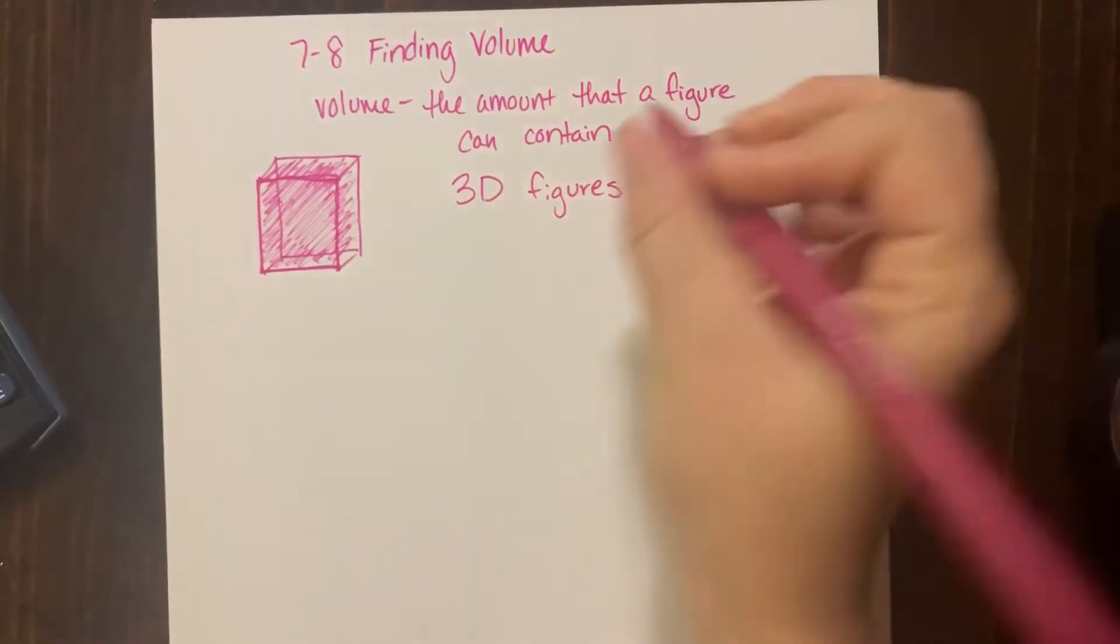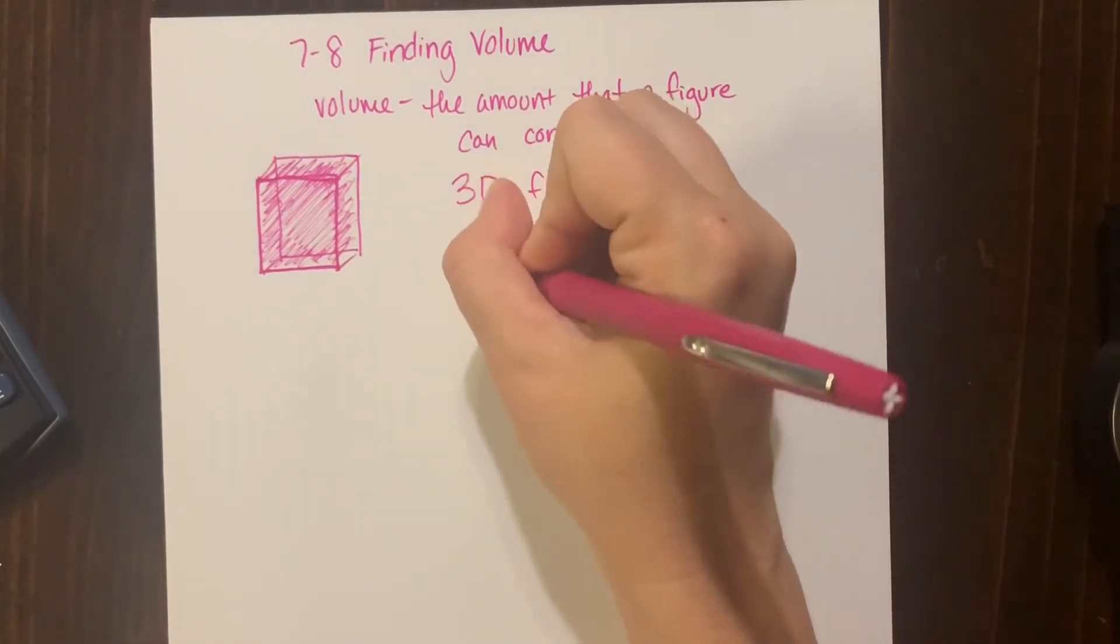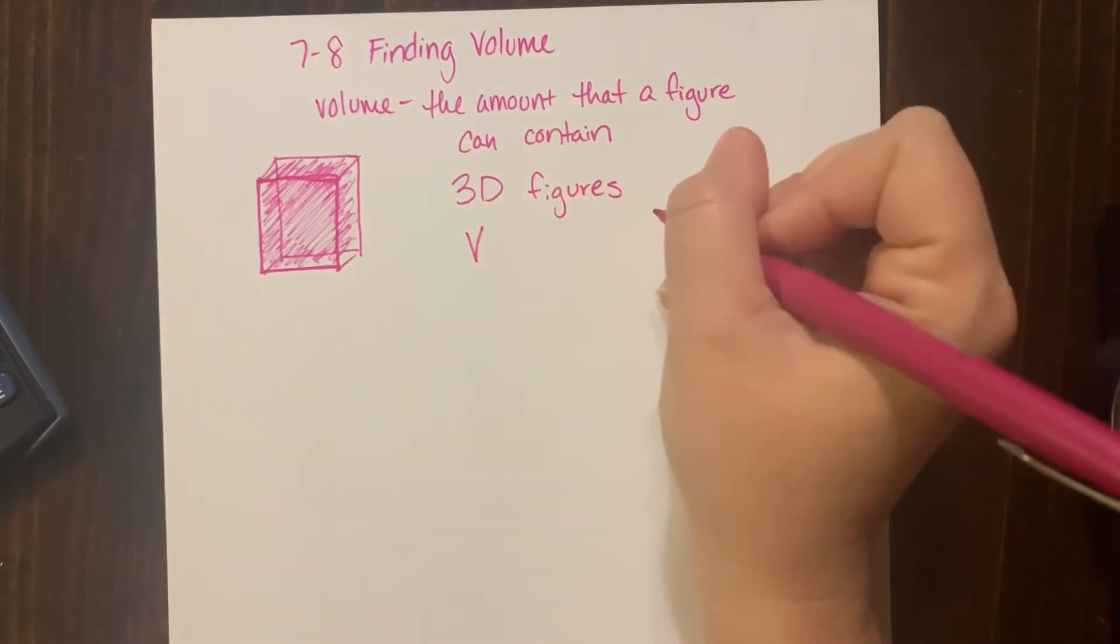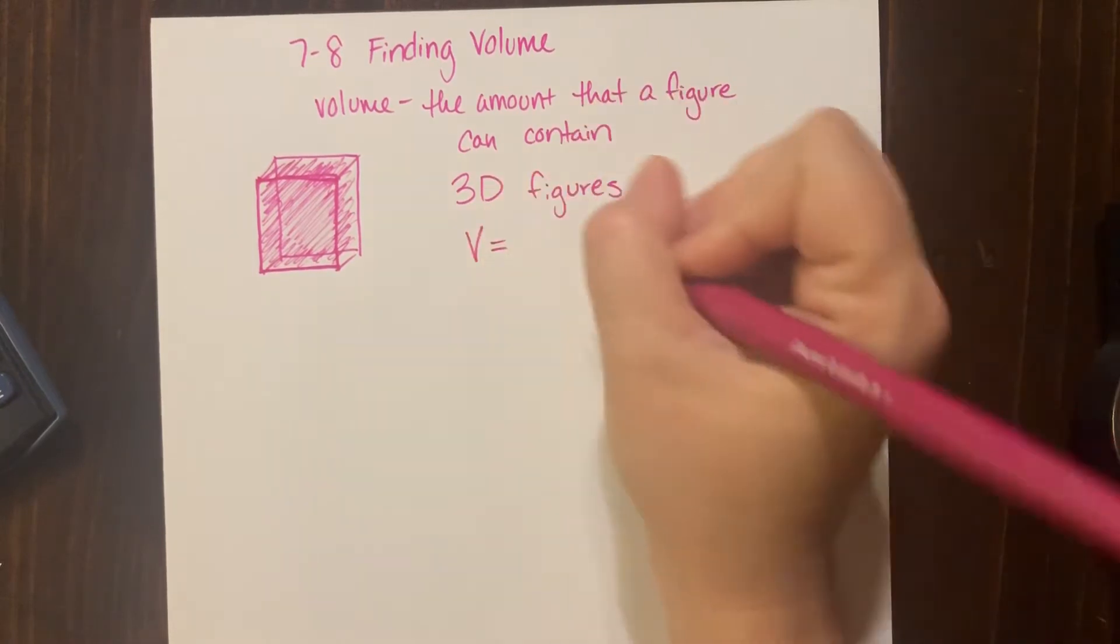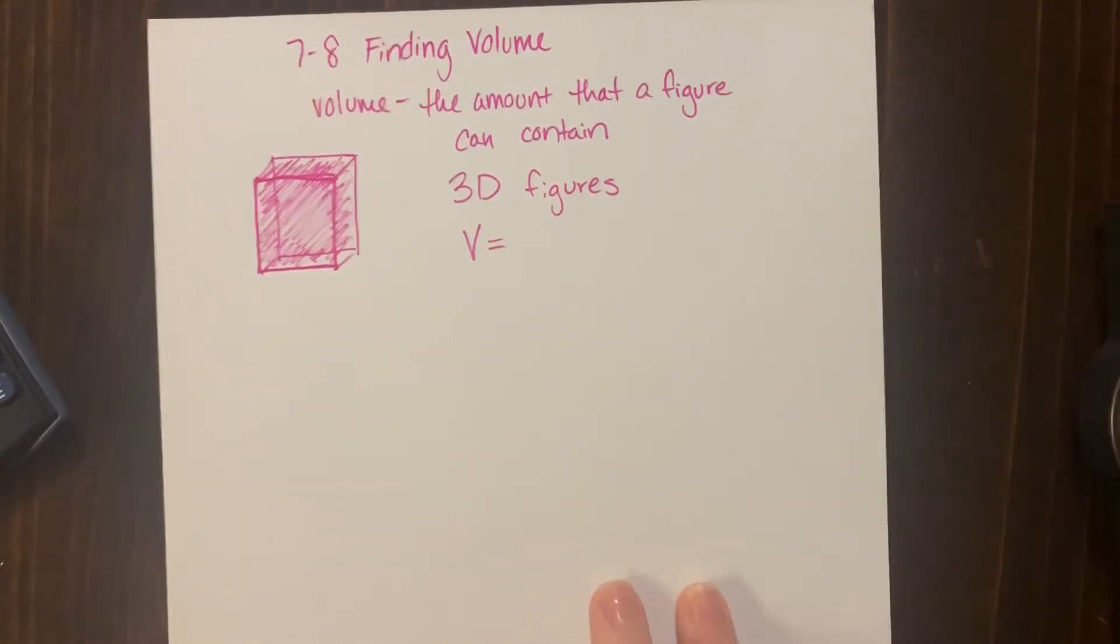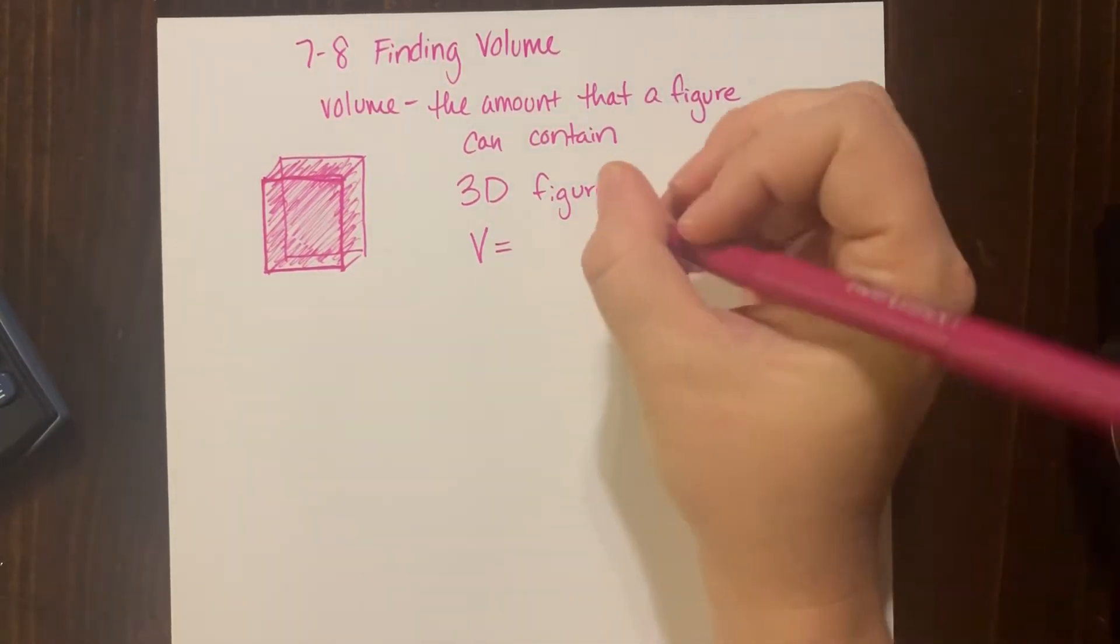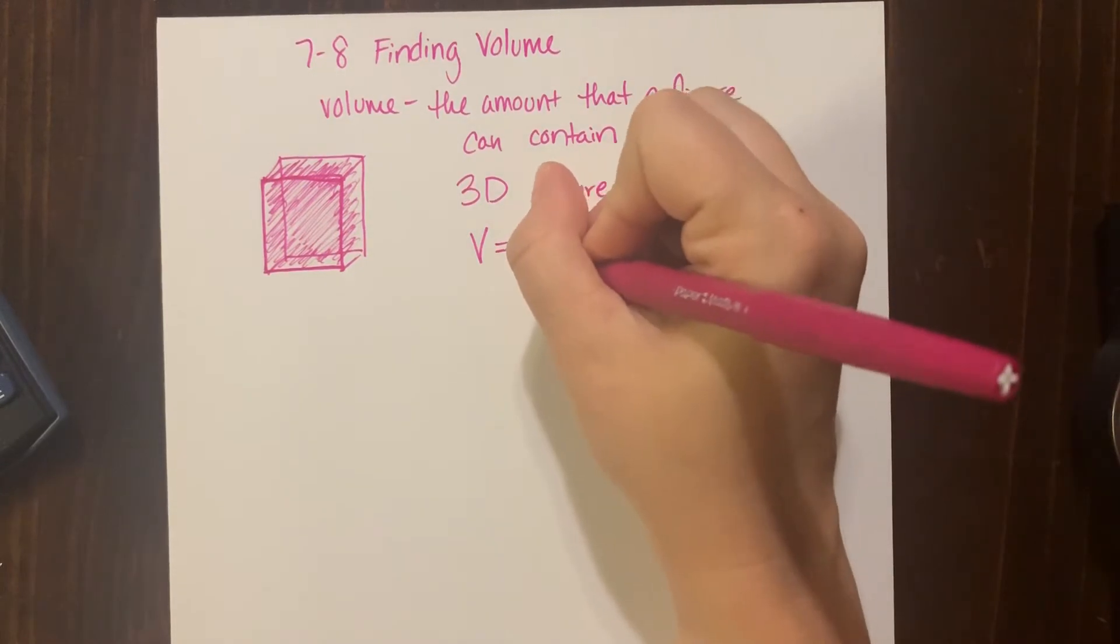So when you're talking about area, you're usually talking about a two-dimensional figure. When we're talking about volume, we're talking about 3D figures, which means we're going to take three dimensions into consideration. For volume of a rectangular prism, you cannot find volume of a two-dimensional shape. Think about it: this piece of paper cannot hold anything inside of it, right? It's flat, can't hold anything.